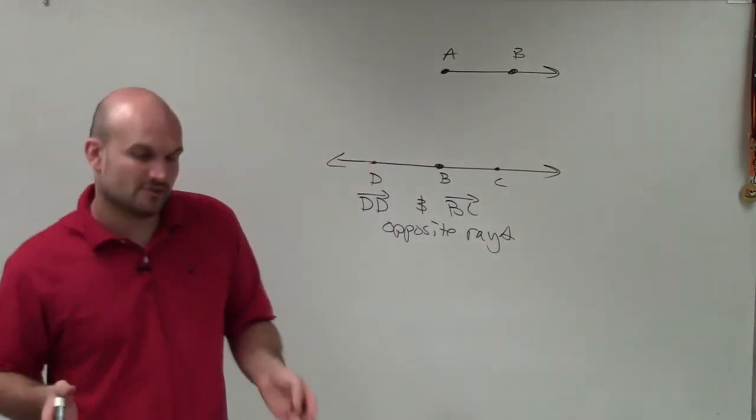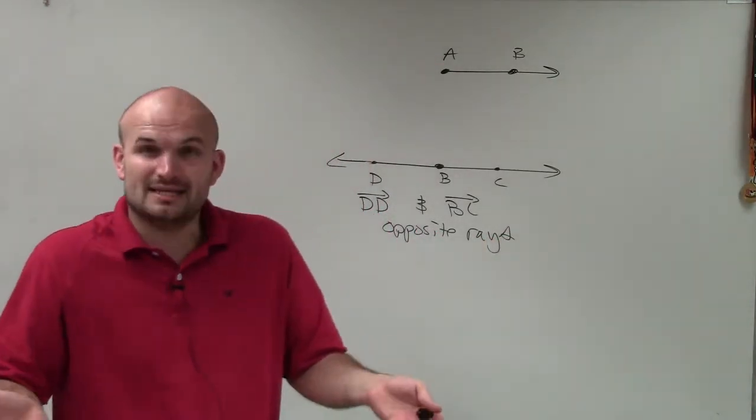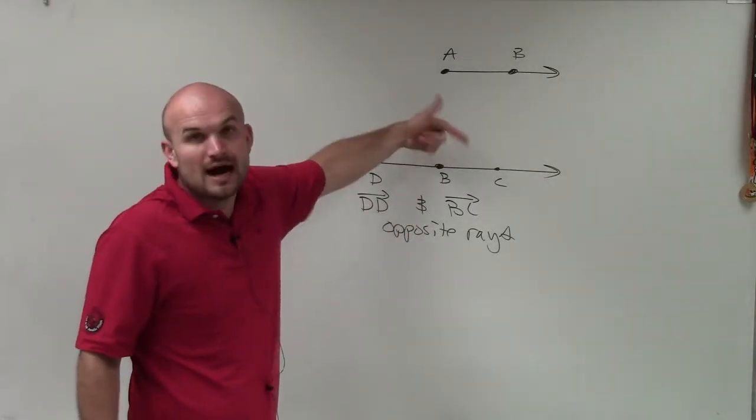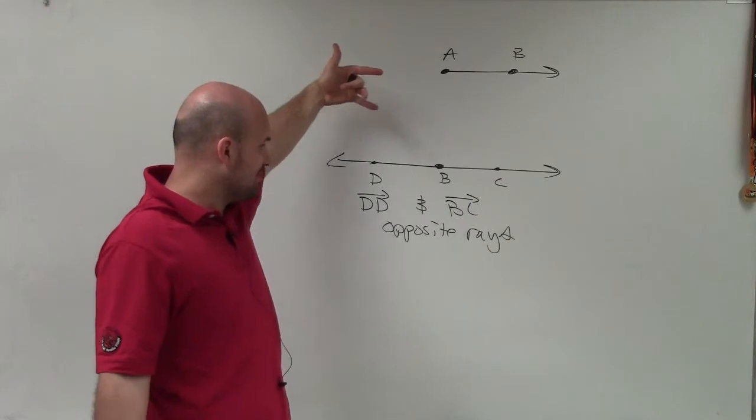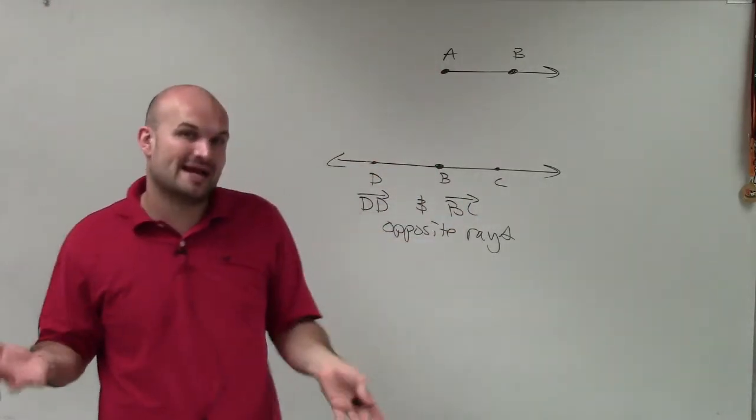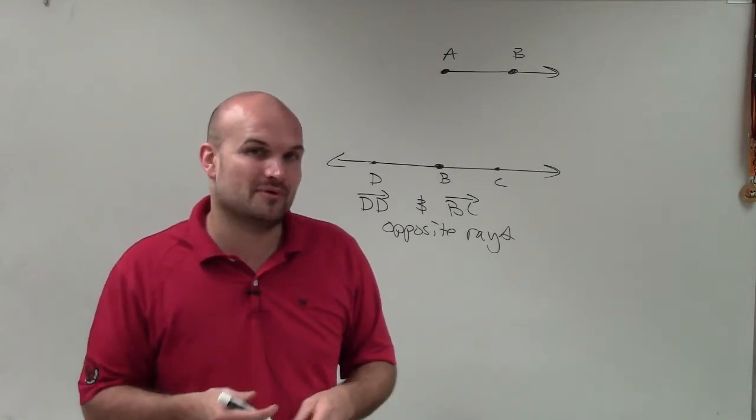So opposite rays, a couple things to remember about opposite rays is they create a line as well as they have a common endpoint. So here's just one example of opposite rays. Again, just remember that opposite rays create a line and have a common endpoint. Thanks.